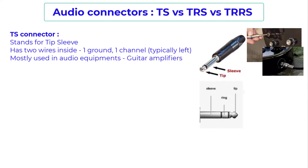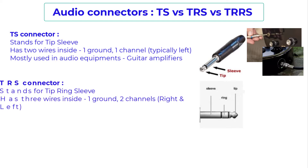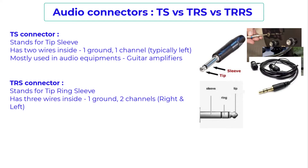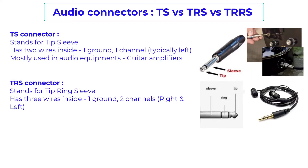Moving on to a TRS connector — the ring is the portion between those two black lines. This is a TRS connector which has three wires inside: one for ground and two for audio channels, right and left. These connectors you will typically come across in earphones which do not have microphone capability. You might also see these in lavalier microphones for recording on DSLRs and other cameras.